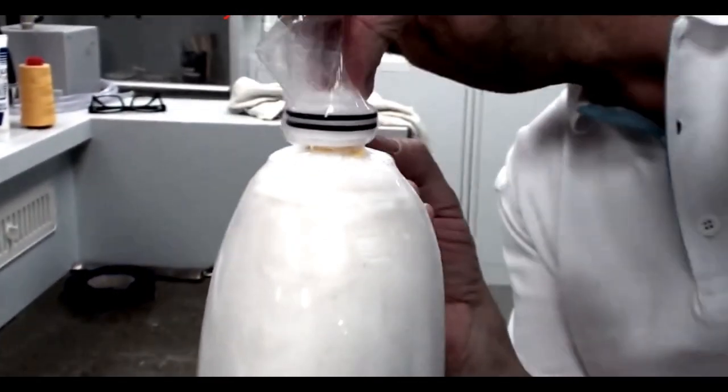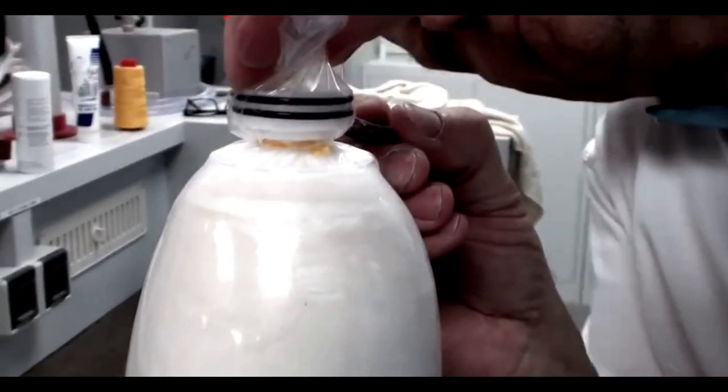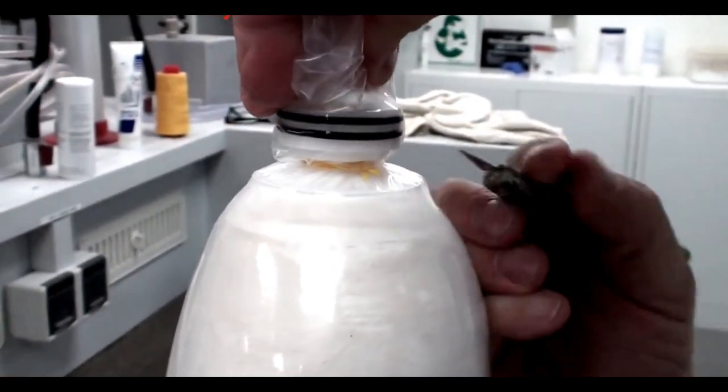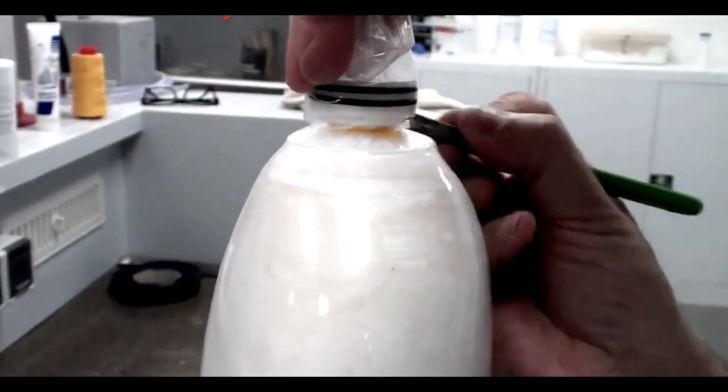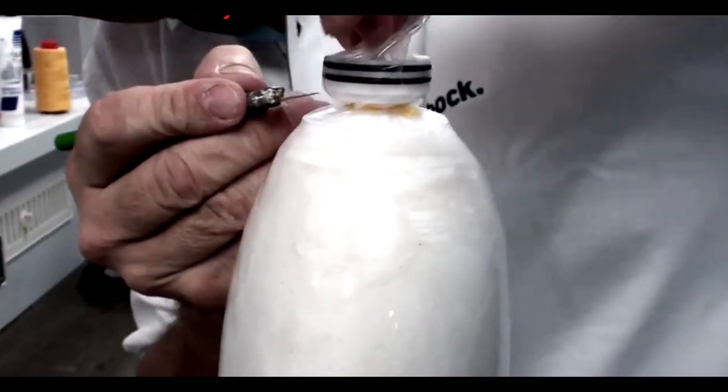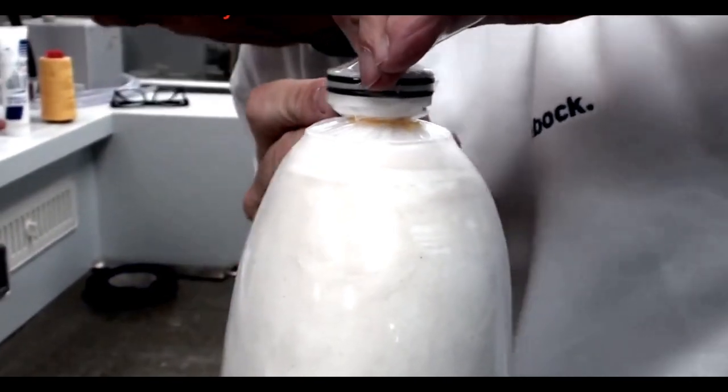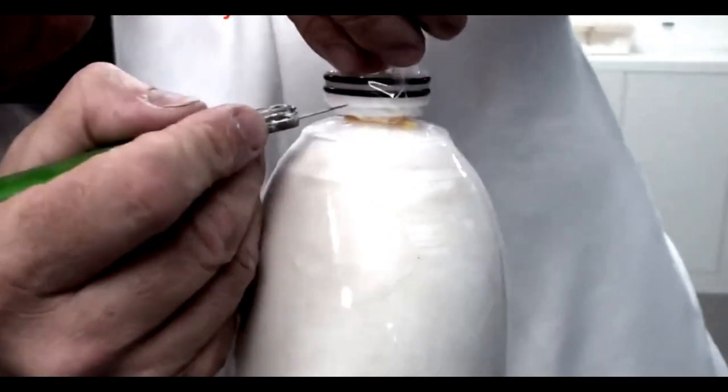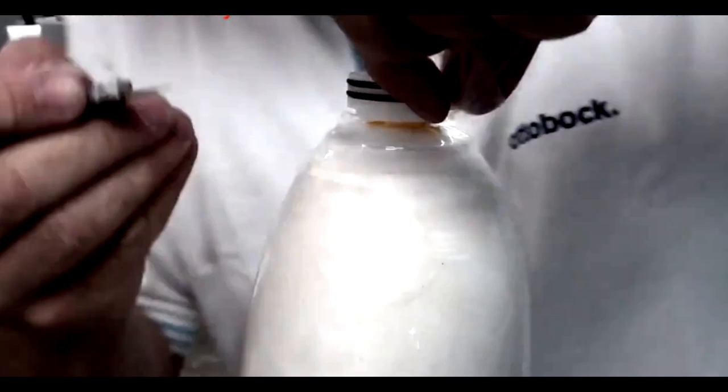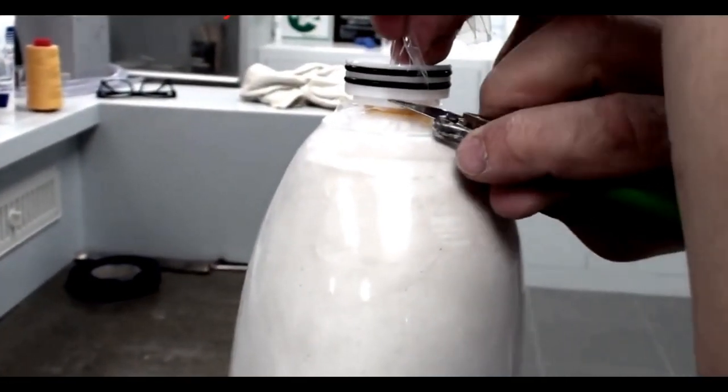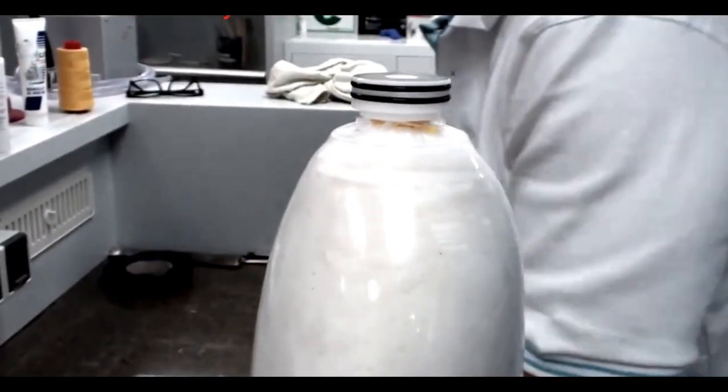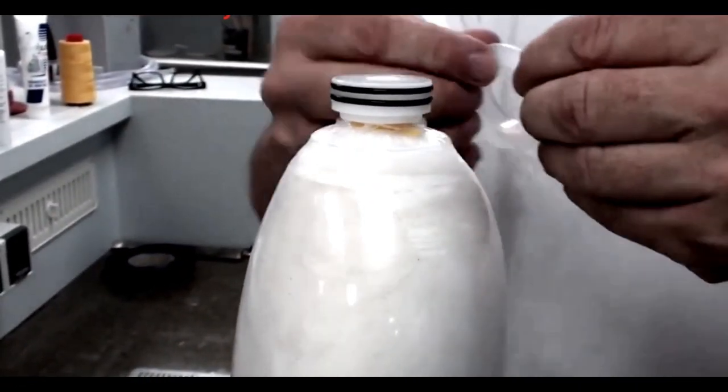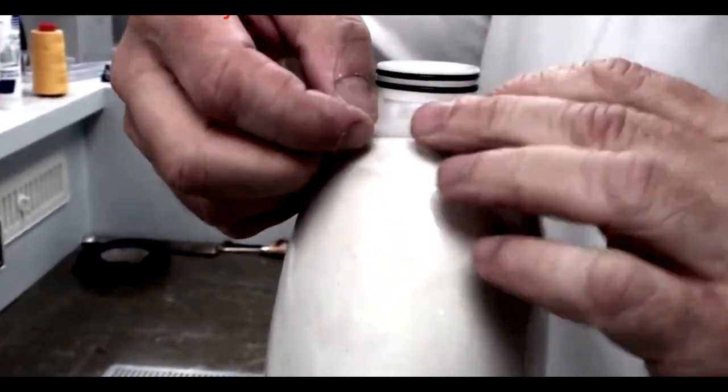Use the scalpel to cut away any excess PVA bag. Just above the level of the thread, place a silicone ring over the lamination dummy.